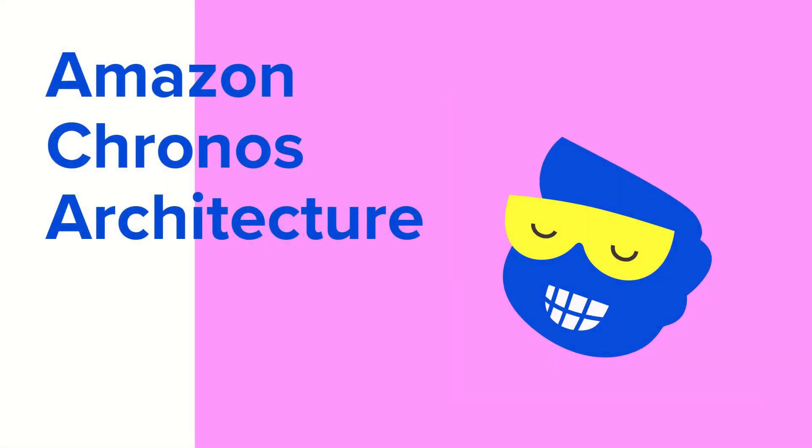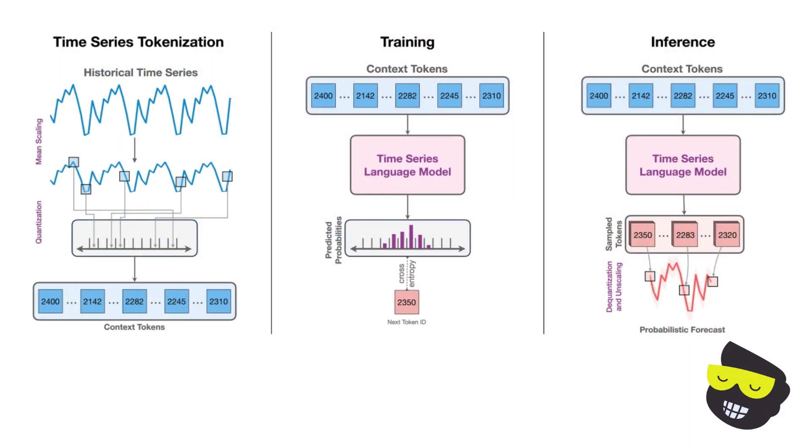In this lecture, we'll dive into the architecture of Amazon Chronos, the innovative tool that leverages large language models to transform time series forecasting. Let's begin by understanding the overall process. We have the tokenization, we have the training, and we have the inference. And I'm going to break down each of them so that you see how this actually works.